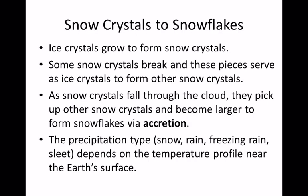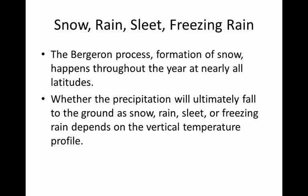Snow crystals, as they fall, are pretty delicate. They can break and actually become seeds for new snow crystals. Some snowflakes are large, some are smaller — it depends on the temperature. A lot of times, even though it's raining here on the ground, it starts out as snow. After we talk about cold clouds and the Bergeron process, we're going to talk about warm clouds.